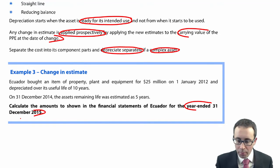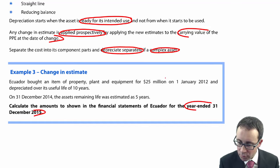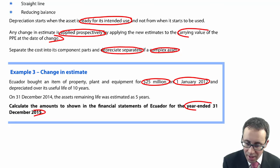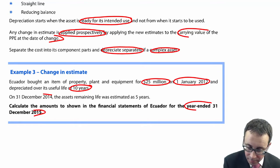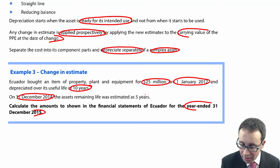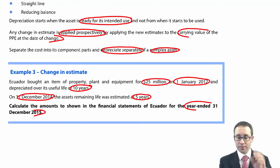So it says Ecuador bought an item of property, plant and equipment for 25 million on the 1st of January 2012, and depreciated it over 10 years. So it was at 2.5 million per annum. On the 31st of December 2014, the asset's remaining life was estimated as five years. So we then need to depreciate the carrying value of December 2014 over the remaining life, five years.